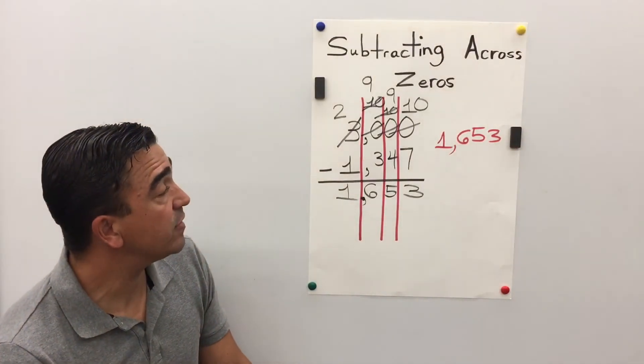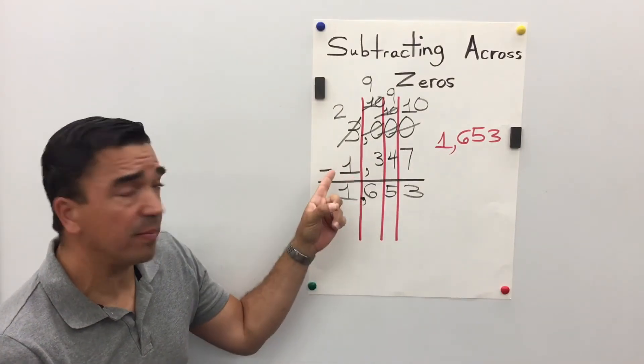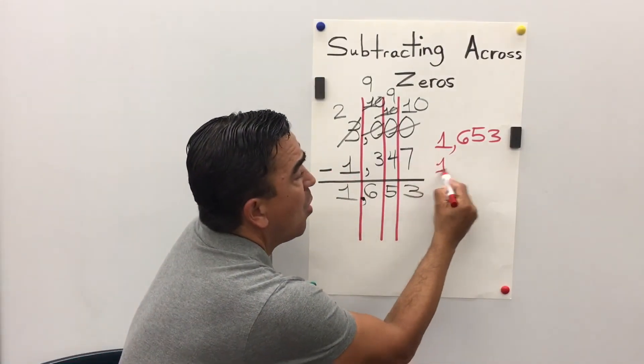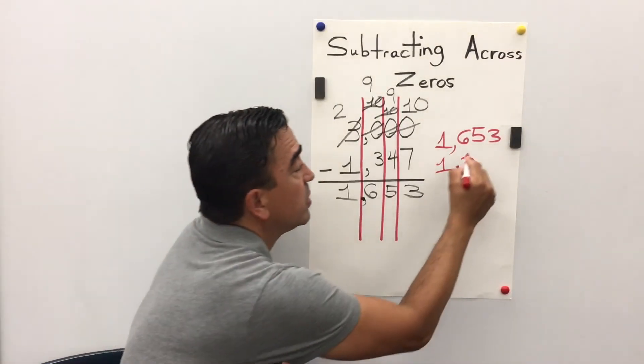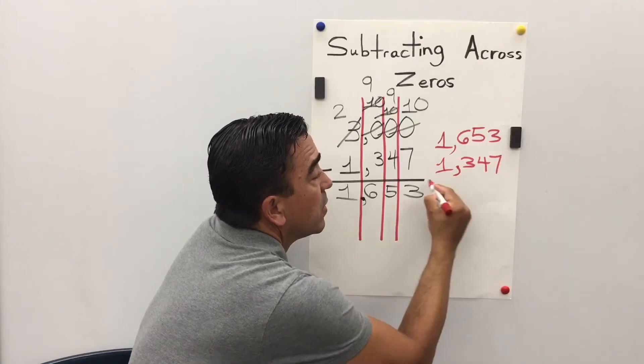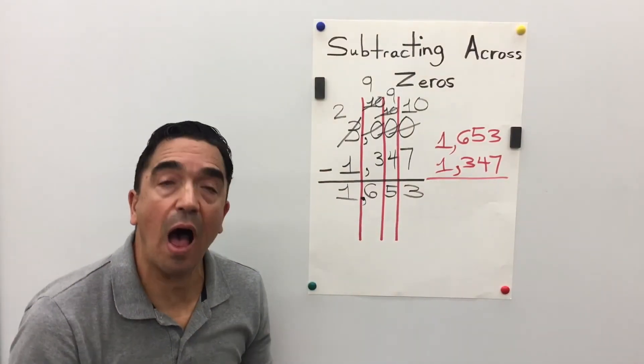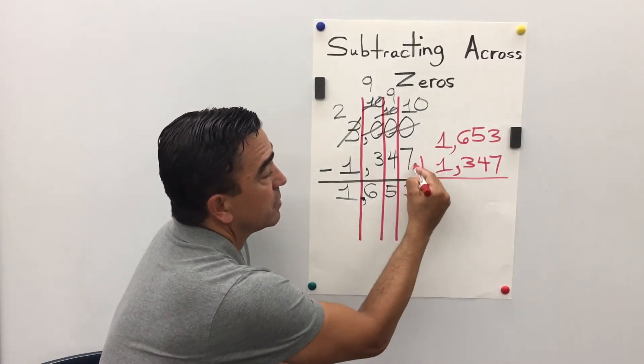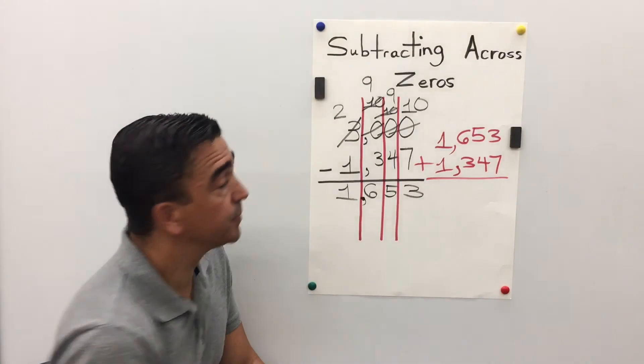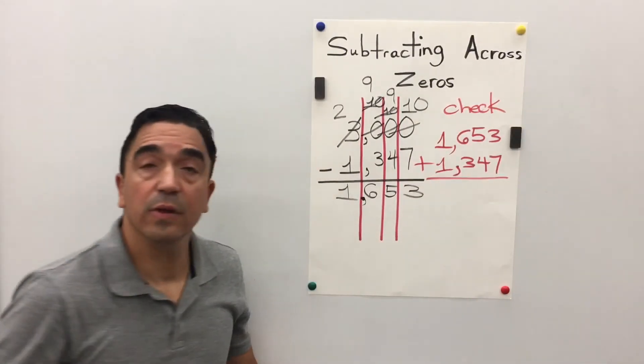And I'm going to take the smaller number in my problem. 1,347. And I'm going to use the opposite operation. Addition. So, let's check.